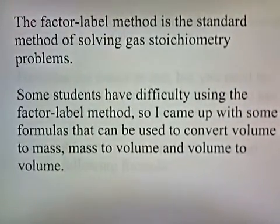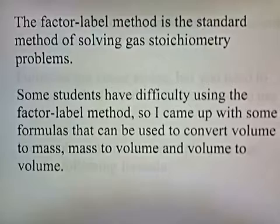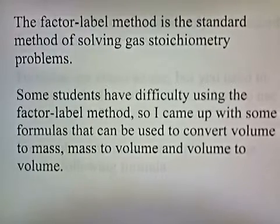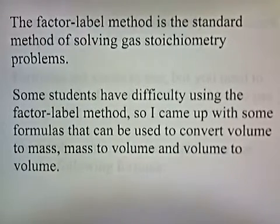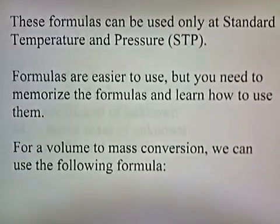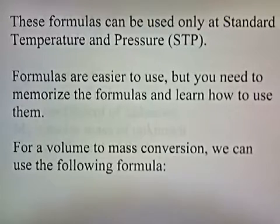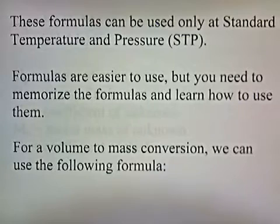The factor label method is the standard method of solving gas stoichiometry problems. Some students have difficulty using the factor label method, so I came up with some formulas that can be used to convert volume to mass, mass to volume, and volume to volume. These formulas can only be used at standard temperature and pressure. Formulas are easier to use, but you need to memorize them — specifically three formulas presented in this video.